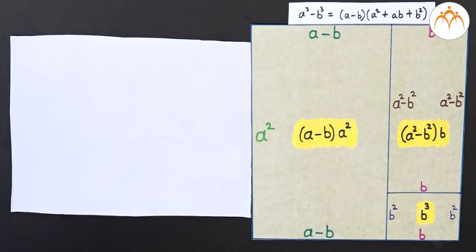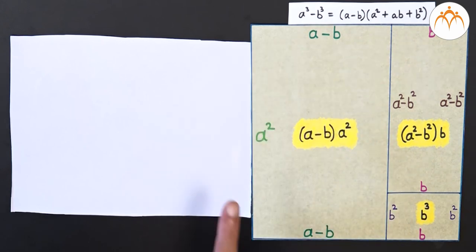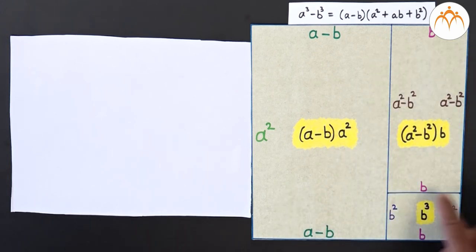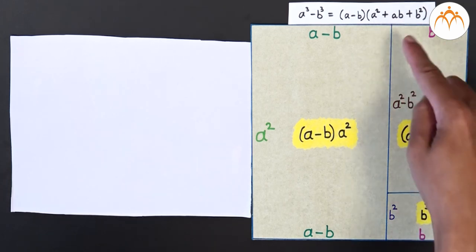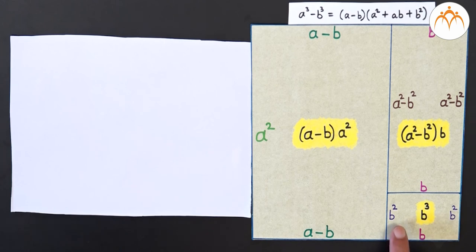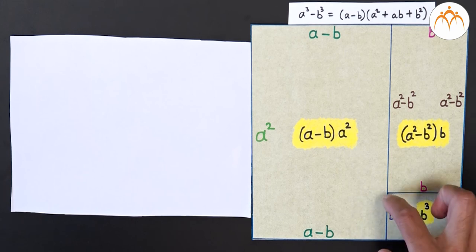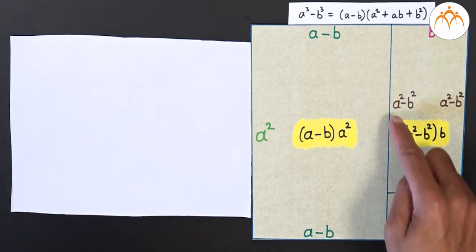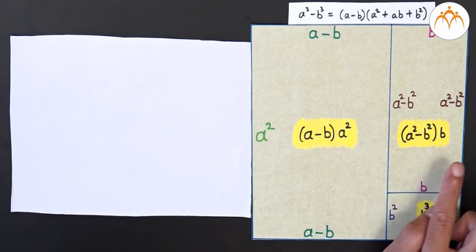Let us consider the first remaining rectangle — its one side is a minus b and the other side has length a squared, so its area is a minus b into a squared. For the second rectangle, one side is b and the other side length is found by taking the total length a squared and removing b squared, giving a squared minus b squared. So the area of this piece is a squared minus b squared into b.